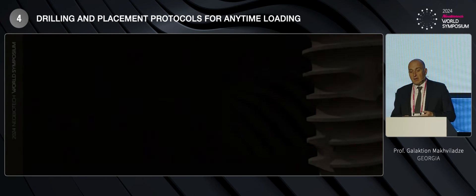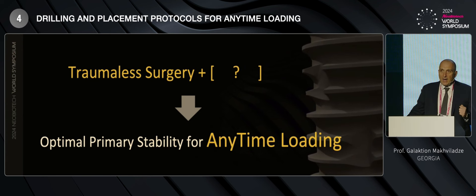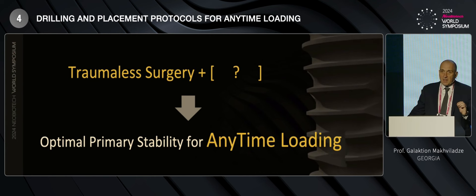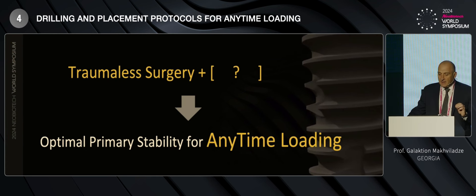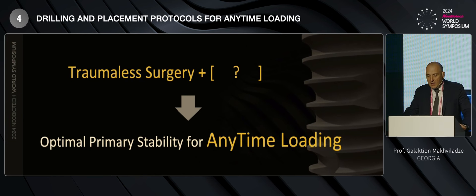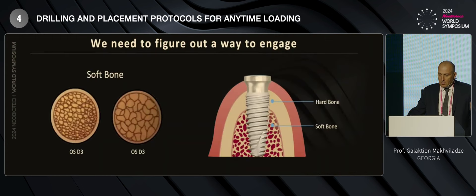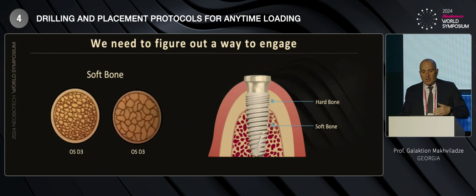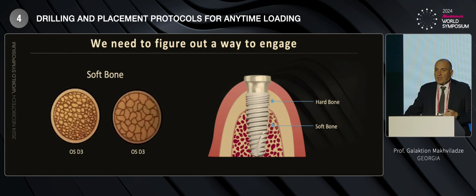As Dr. Ho pointed out in his very informative presentation, minimizing bone trauma in the dense bone is very important. My question is: how do we still get the optimal primary stability that we want in order to enable AnyTime Loading? If our goal is to have good primary stability, we can't achieve this just in soft bone — we need hard bone for primary fixation, and we need to figure out a way to engage the fixture into the dense cortical bone.